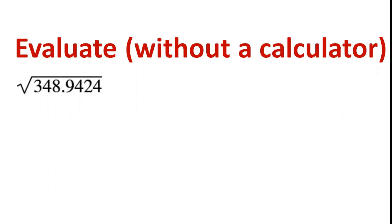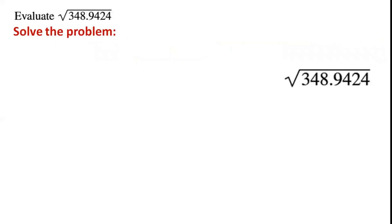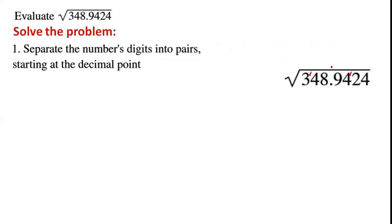Evaluate without a calculator the square root of 348.9424. First, we separate the digits into pairs starting at the decimal point. So we have 3, 48, 94, and 24.